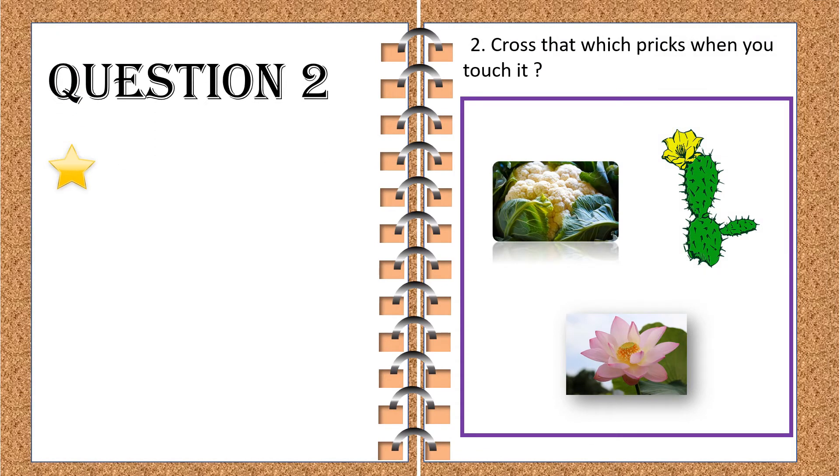The second question says, cross that which pricks when you touch it. Ready with the answers? Great! Let me give you the correct answer. The correct answer is cactus. We have crossed the cactus. That's great. Once again, we will mark a star for ourselves. Great!